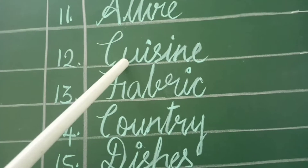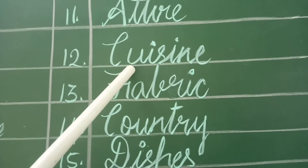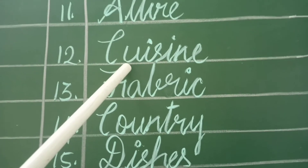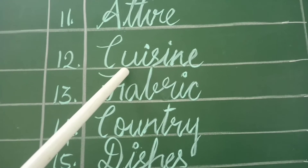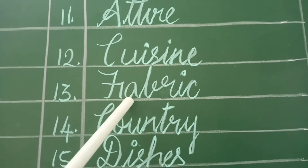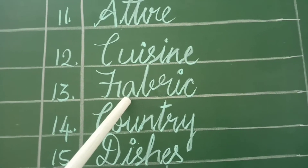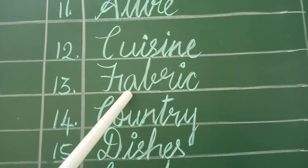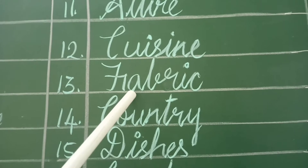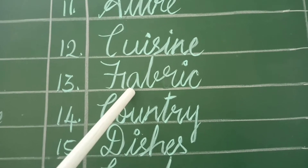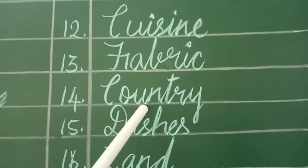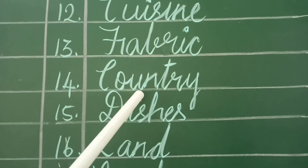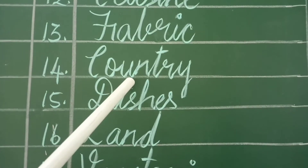Cuisine — it means a style or method of cooking. Samayakalai. Fabric — it means cloth produced by weaving. Nayyya patta tuni. Country — it means a nation. Naadu.